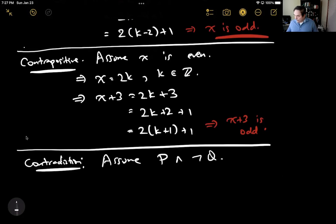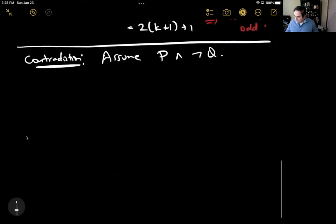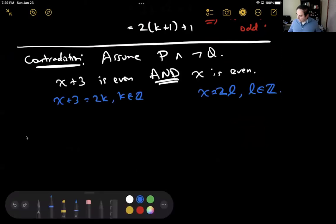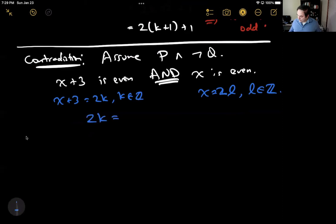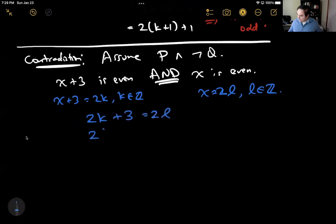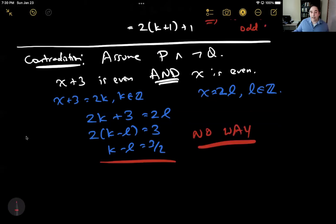For contradiction, I want to assume P and not Q. P is 'x plus 3 is even' and not Q is 'x is even.' So I assume x plus 3 is even and x is even. If x equals 2L, then 2k plus 3 equals 2L, or 2k minus 2L equals 3, which means k minus L equals 3 halves. That is a contradiction — there's no way that can happen, because k and L are integers, and integers cannot differ by 3 halves.